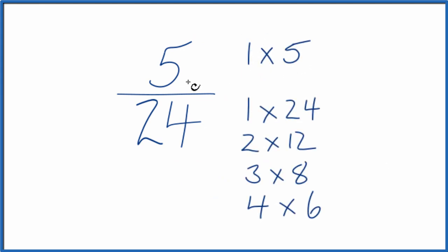So when I look at the factors for 5 and for 24, the only number that's in common, the greatest common factor, is 1.